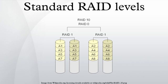RAID 3 uses byte-level striping with a dedicated parity disk. RAID 3 is very rare in practice. One of the characteristics of RAID 3 is that it generally cannot service multiple requests simultaneously. This happens because any single block of data will, by definition, be spread across all members of the set and will reside in the same location. So any I/O operation requires activity on every disk and usually requires synchronized spindles. This makes it suitable for applications that demand the highest transfer rates in long sequential reads and writes, e.g. uncompressed video editing.